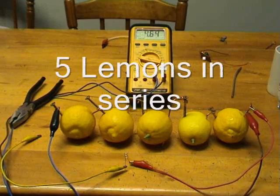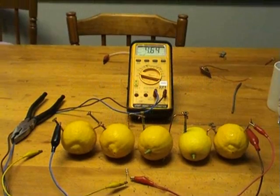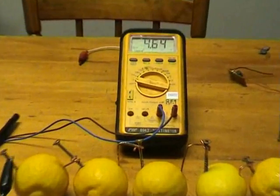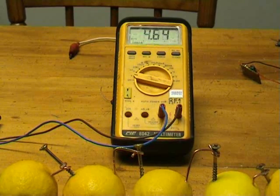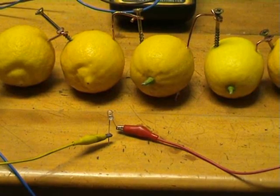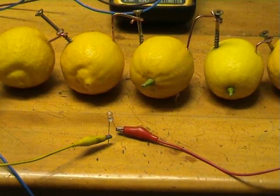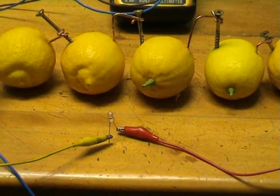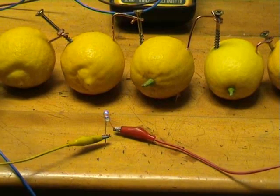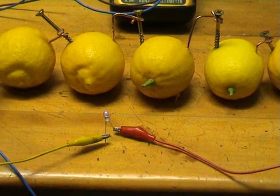5 cell lemon battery. Voltage 4.64 volts. Disappointing low current. It's got a blue LED on here. It's connected up to the terminal. It's hardly glowing.